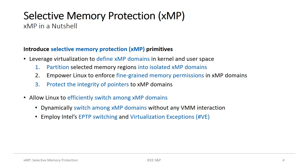We introduce selective memory protection, or XMP primitives, to assist operating systems in thwarting data-oriented attacks. We use virtualization extensions of Intel to provide Linux with the following primitives. First, we partition selected memory regions holding sensitive information into disjoint XMP domains. Second, we isolate XMP domains by enforcing fine-grained memory permissions. Third, we obstruct corruptions of pointers to XMP domains by equipping them with context-bound HMACs. To avoid interactions with the VMM, we use Intel's fast EPTP switching and virtualization exception capabilities, allowing Linux to dynamically switch among different XMP domains without outsourcing the entire logic to the hypervisor.